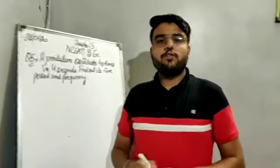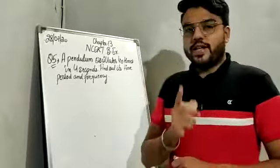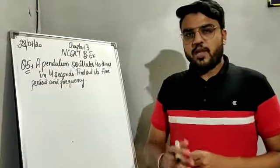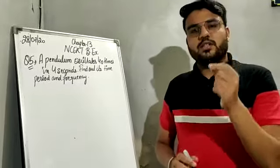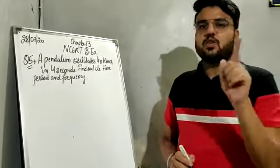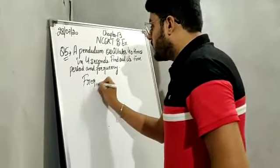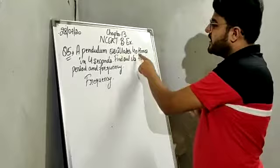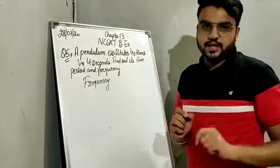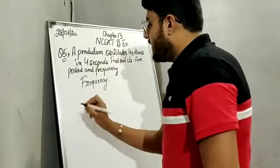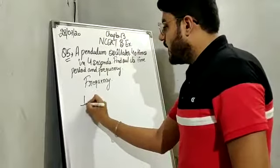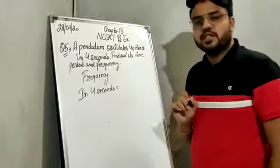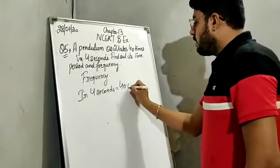Now we have to calculate the frequency as well. Frequency is the number of oscillations per second — that is, the total number of oscillations completed in one second is called the frequency. In the question, 40 oscillations are done in 4 seconds.